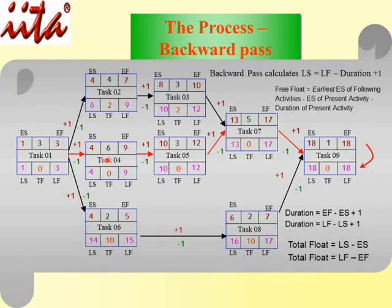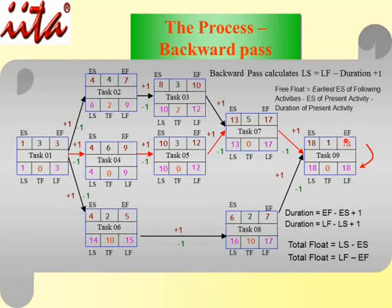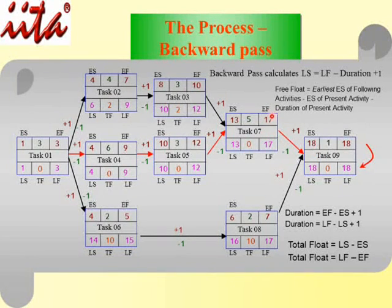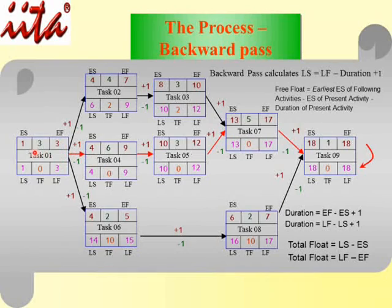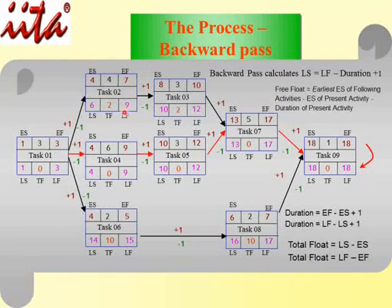You can now see the critical path — shown as the red path. Along the critical path, the EF and LF are the same, and the ES and LS are the same, meaning there is no float. For example: 17/17, 13/13, 9/9, 4/4, 1/1 — these matching values confirm the critical path. On non-critical paths, the ES and LS are different, and the EF and LF are different.